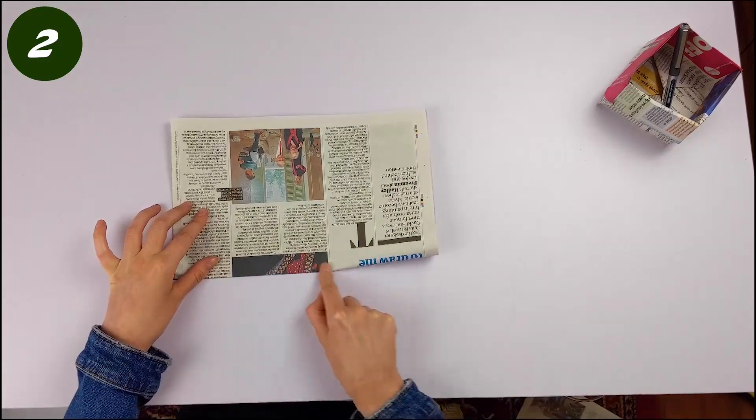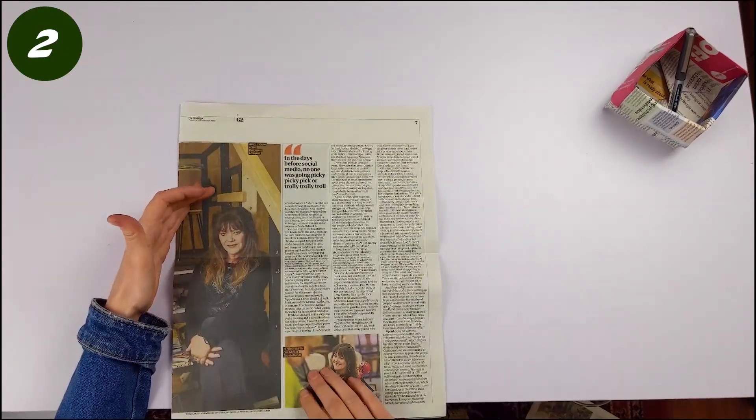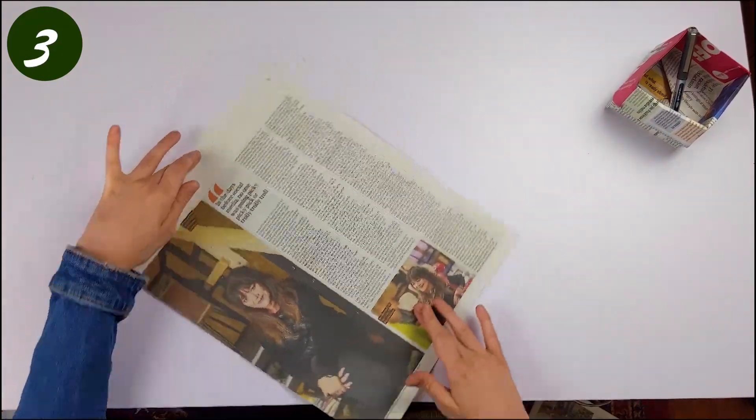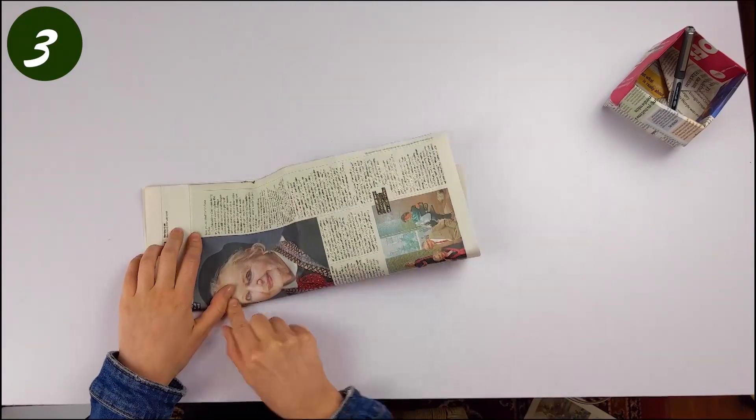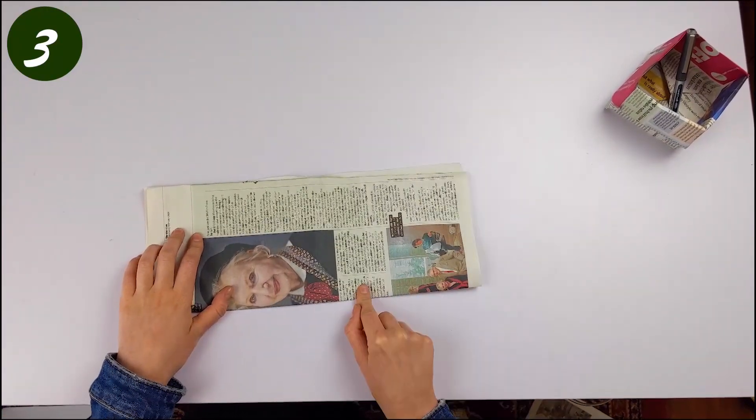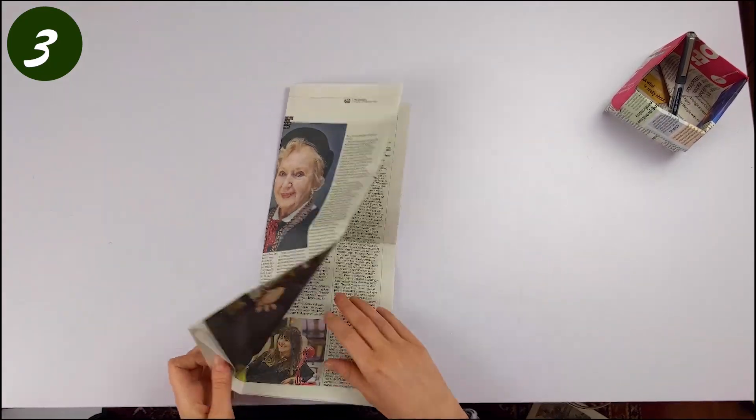Easy peasy, just firm up that fold there, bring it back down again and we're going to do it again just flipping round, make the sides meet each other as well, firm that right down, then unfold and you've got yourself a cross.